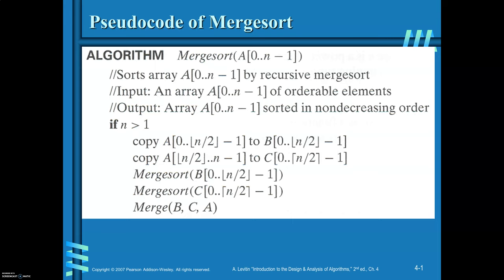This is the pseudo-code for dividing the problem into equal halves. When N is greater than 1, you apply merge sort. When N equals 1, there is no need to call merge sort because a single element is already sorted. When N is greater than 1, copy the first half — elements 0 to N/2 minus 1 — onto B, and the second half — elements N/2 to N minus 1 — onto C. Then apply merge sort separately for subarray B and subarray C. These two arrays are merged to get sorted array A.